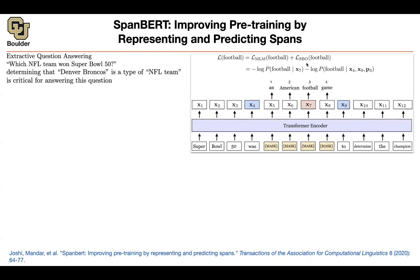The new part of the loss: you need to tell the model when the masking started, when it ended, and at what position you are trying to predict an answer. It needs all four pieces of information: when did masking start, when did it end, and which of those masked positions are you interested in. A position indicator p3 does that, and then you increase the probability of 'football' being the answer. You do the same for every other masked word, with a summation over all of them.